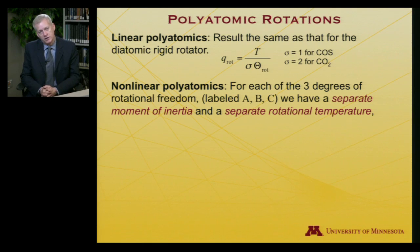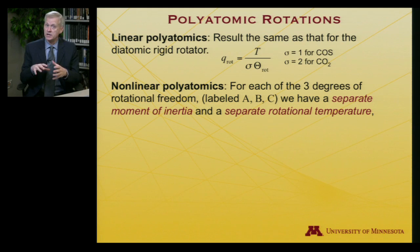Now for nonlinear polyatomics, the situation is a bit more complicated. Once we have atoms in space that are not aligned in a single line, there will be three unique moments of inertia, and you can think of those as being aligned on Cartesian axes if you like. There's an Ix, an Iy, and an Iz, or maybe we should give them different labels. We'll call them Ia, Ib, and Ic.